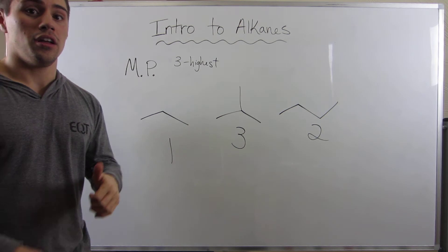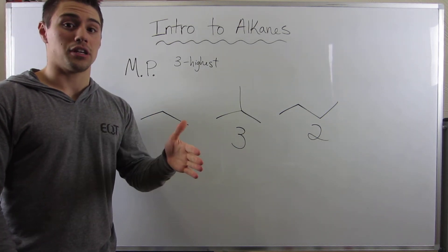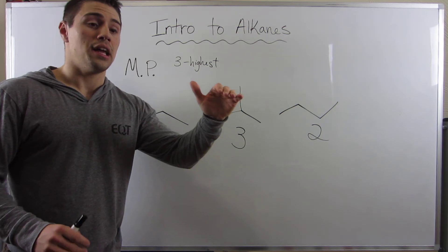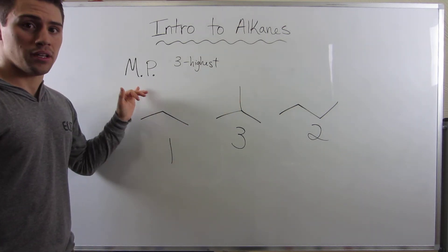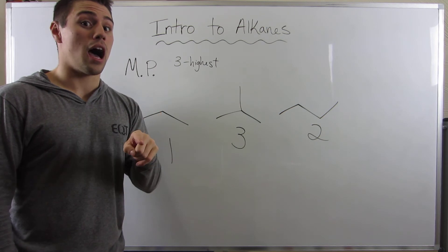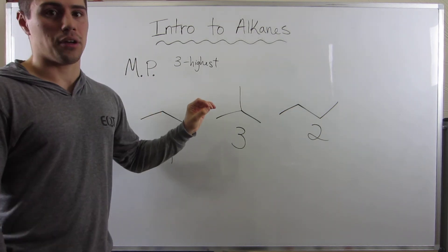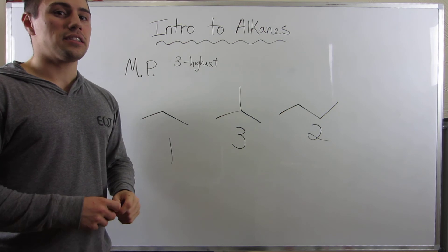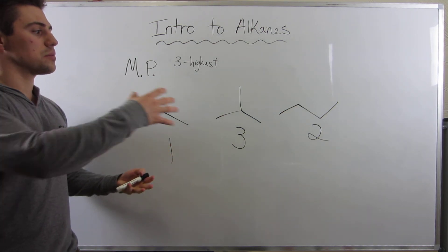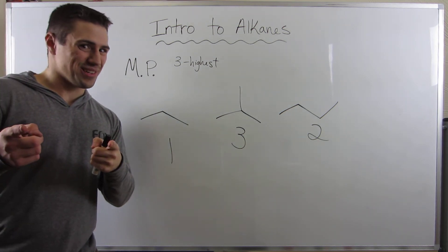So remember: for boiling point, go with the heaviest molecule, and if there's branching and a tie between weights, go with straight chain. However, when it comes to melting point, you go with the heaviest molecule, but if there's a tie, go with branching. That's just a little peek into alkanes, but let's get into naming — if I give you some type of structure, how do you name it? Let's get to it.